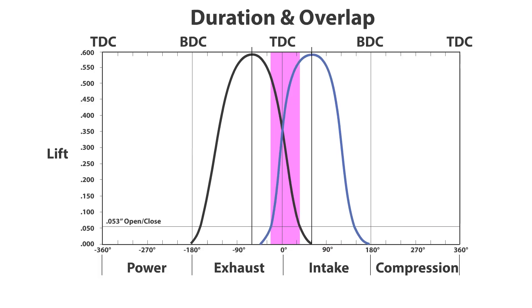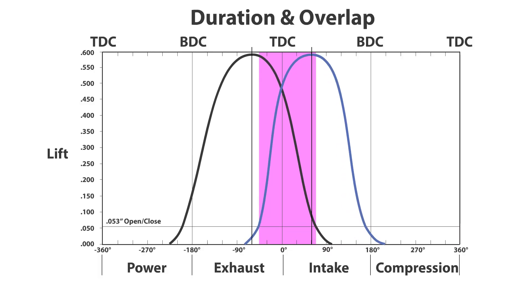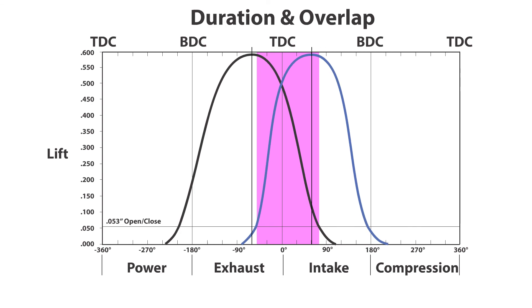Keep in mind that duration also affects overlap. This illustration shows how overlap increases as valve duration increases, even though the lobe centerlines and lobe separation angles remain the same. So lobe separation angle may be somewhat helpful in choosing between two likely cam grinds, but in reality the duration and timing numbers will probably have already told you what you need to know.